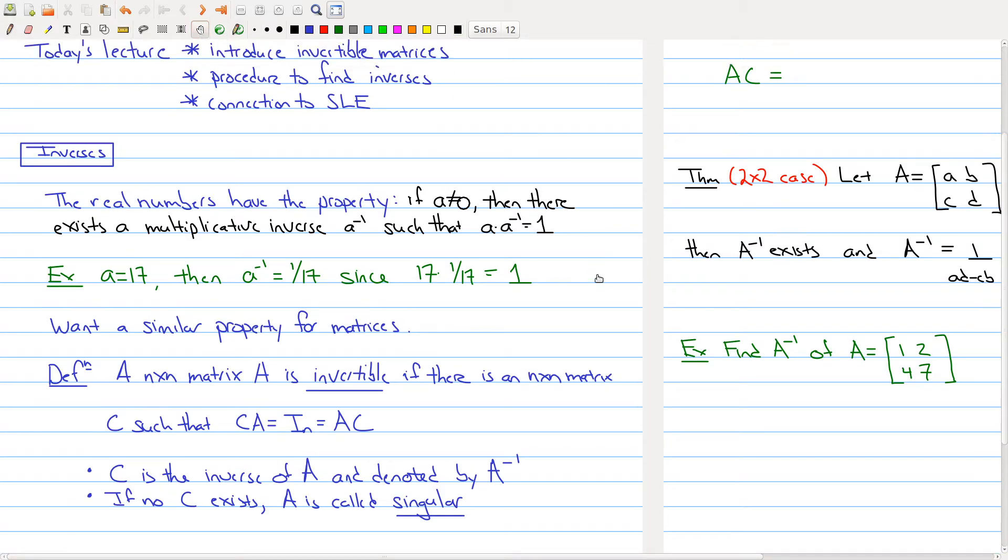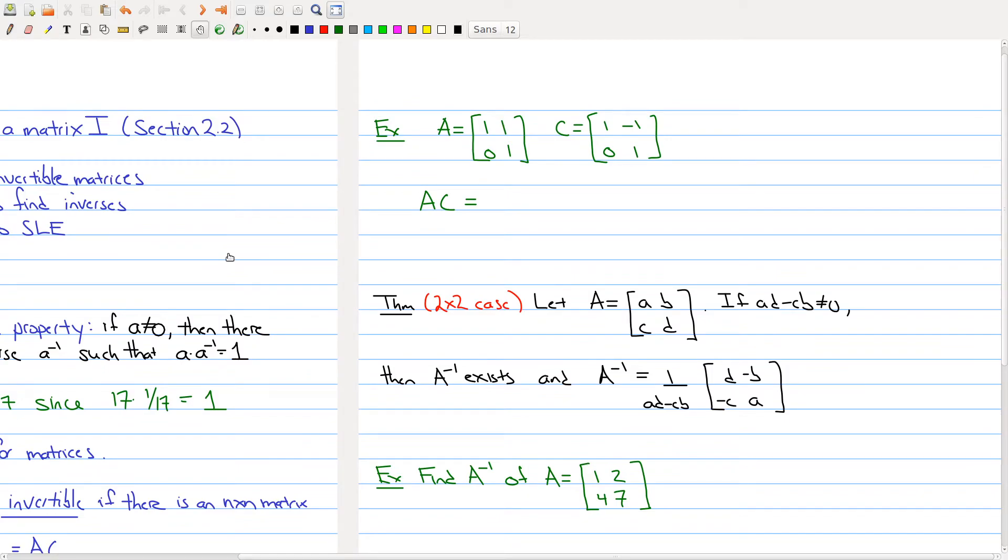Let me give you an example to show you that yes, inverses exist. Here I have a matrix A, it's a two by two matrix, and I have a matrix C which is also a two by two matrix. Let's multiply these two matrices together. This is good review of our matrix operations. When I multiply AC, I get the identity matrix. So technically you should also check that this is the same thing as A times C. So C is the inverse of my matrix A.